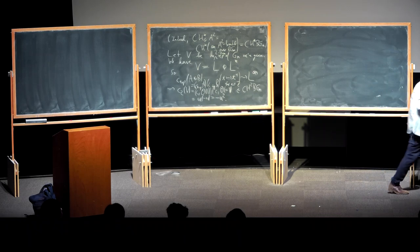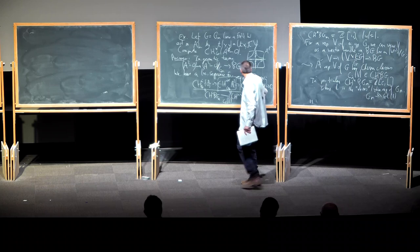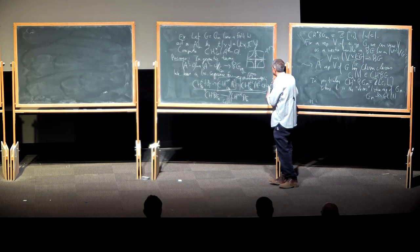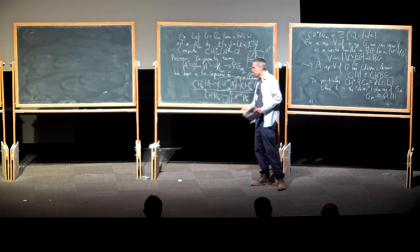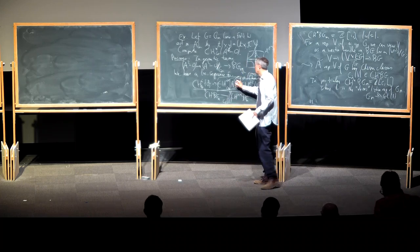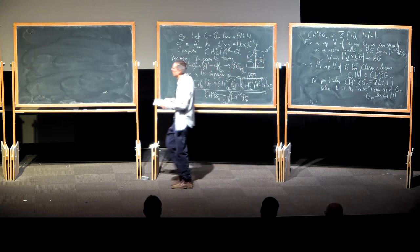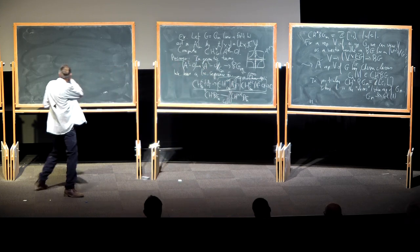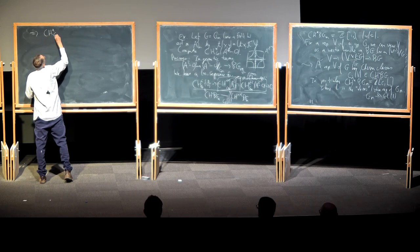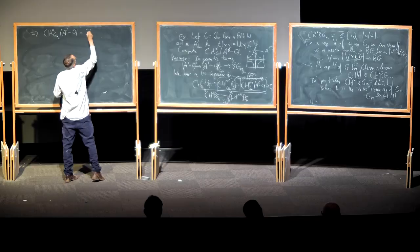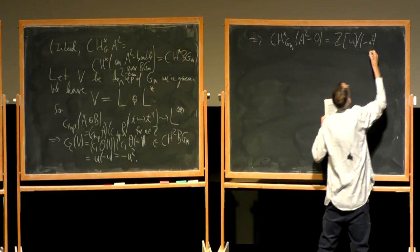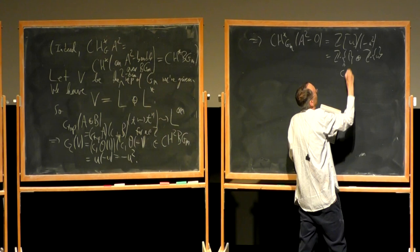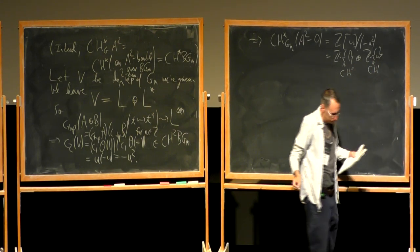This is a model example of how equivariant Chow groups are useful. The action of G_m on A²\{0} is free (stabilizers are trivial), but it's easier to compute by relating it to other spaces like A² where the group acts non-freely, because homotopy invariance tells you something useful. So the G_m-equivariant Chow ring for this action is the polynomial ring on one generator modulo the ideal generated by −U², which you could write as Z·1 ⊕ Z·U, where Chow⁰ is Z, Chow¹ is Z, and everything else is zero.